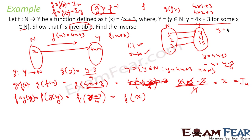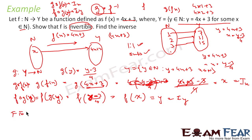So g(f(x)) = I_X and f(g(y)) = I_Y. This confirms that f is invertible. Since we are asked to find the inverse as well, we didn't need to separately prove one-to-one and onto — that would be a waste of time.